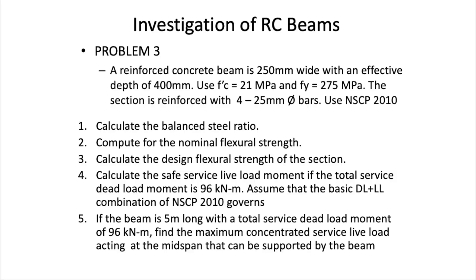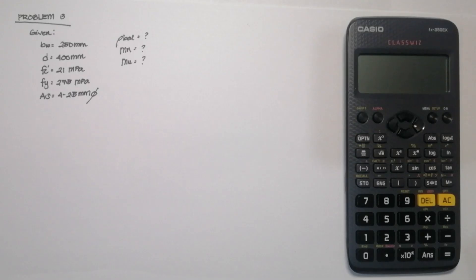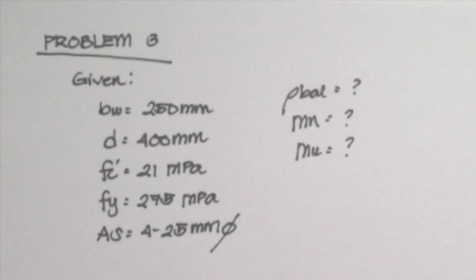Welcome to the third part of our practice problem solving involving investigation and analysis of singly reinforced beams. We have here a summarized up-to-given. The base of the beam is 250mm, the effective depth of the beam is 400mm, compressive strength of 21MPa, and the yield strength of the steel is 275MPa. And our reinforcements are composed of four 25mm diameter bars.